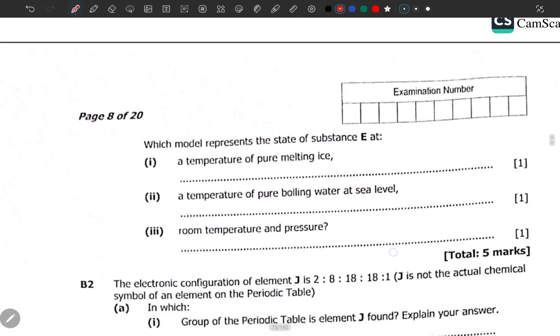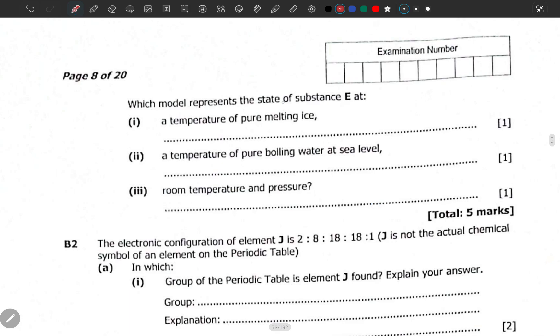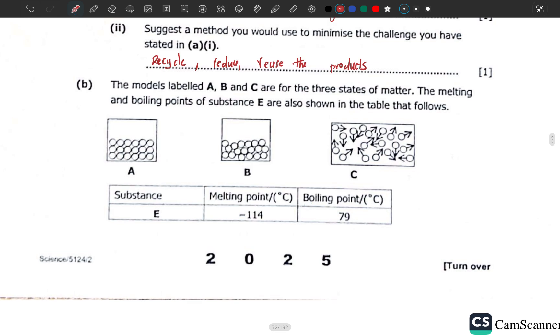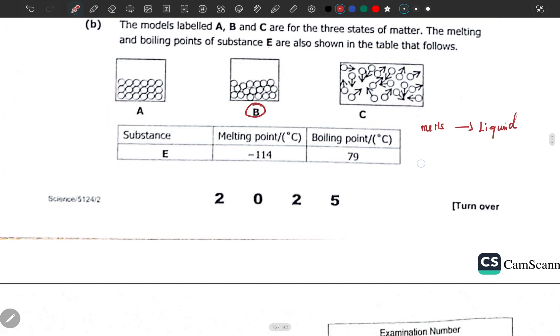Which model represents the state of substance E at the temperature of pure melting ice? At the temperature of pure melting ice, the melting point of pure ice - when ice melts, where does it go? It goes to liquid, so it should be B. Simple as that.